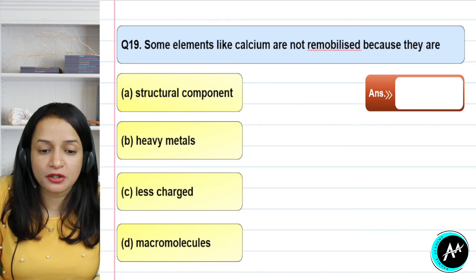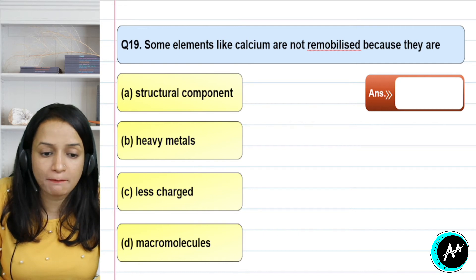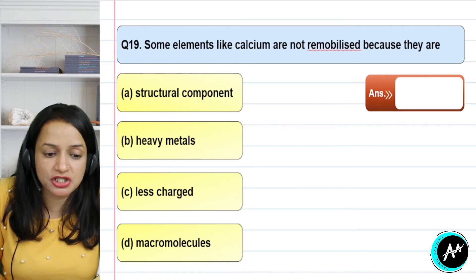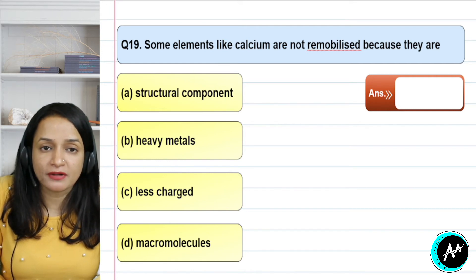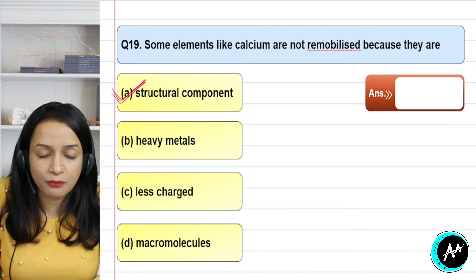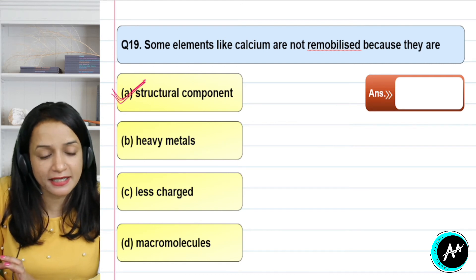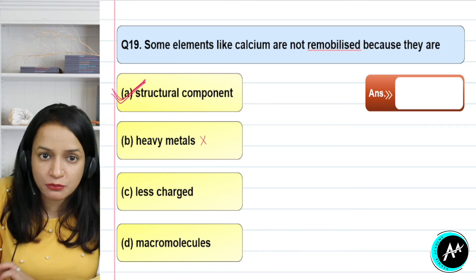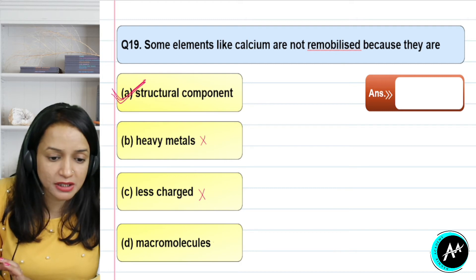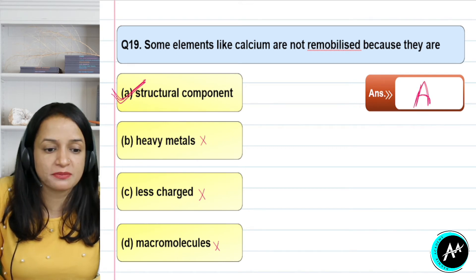Question 19: some elements like calcium cannot be re-mobilized because they are — structural components, heavy metals, less charged, or macromolecules? Elements that cannot be re-mobilized have the most important reason: they form structural components. Once they form a structural component and become involved in a structure, we cannot re-mobilize them because they are adjusted into that structure. It is not because they are heavy metals, less charged, or macromolecules. The correct answer for question 19 is option A — structural component.